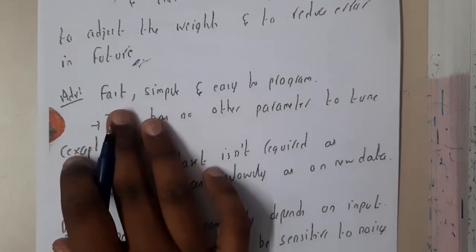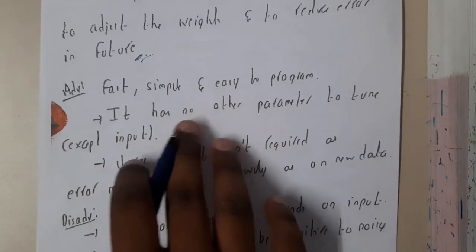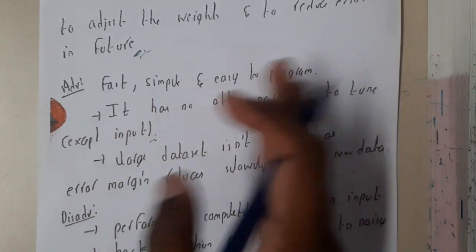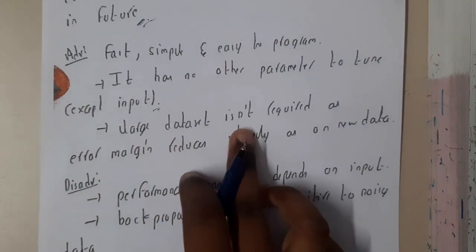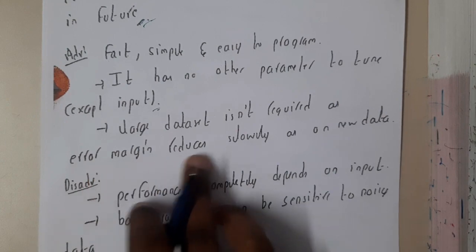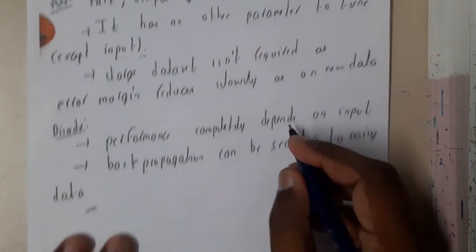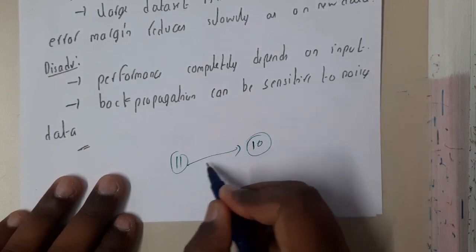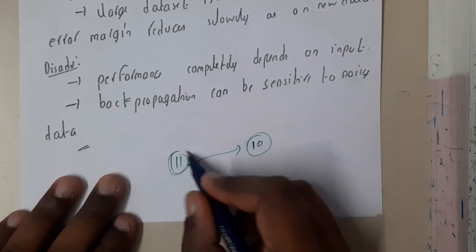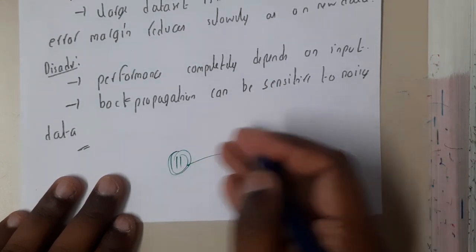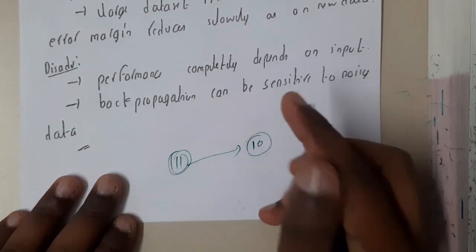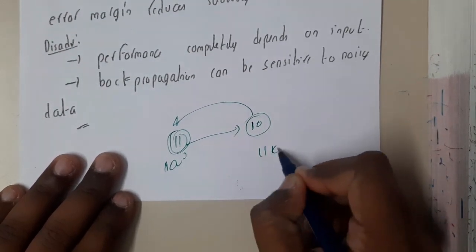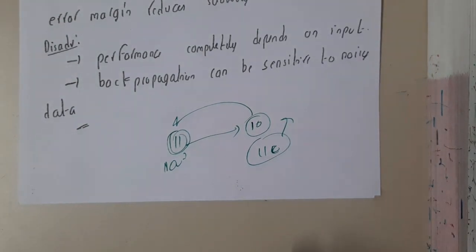The advantages of this: it is fast, simple, and easy to program. It has no other parameters to tune except the input, so basically based on the input and output only you'll be tuning everything. Large data set isn't required as error margin reduces slowly on new data. Basically, if you even train with 10 values, if you give 11th value and got wrong, you will be training with this. Indirectly, even if it is wrong, you are saying this is the correct way. If you give 100 samples here, indirectly you have trained your system with 110 data input.